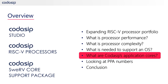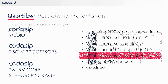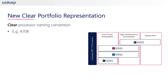Philip, I see CODISIP has announced new application cores. Can you tell us more about them? There have been a number of new developments with the CODISIP RISC-V processor portfolio. To start with, we have recently updated all of our IP with a new naming convention that is more in line with how the industry references processor IP.